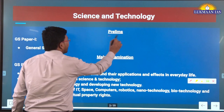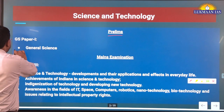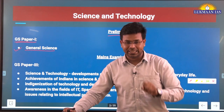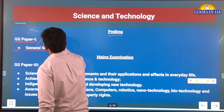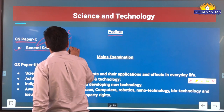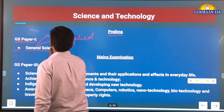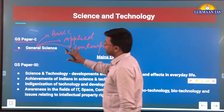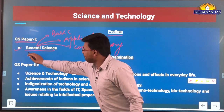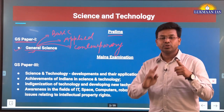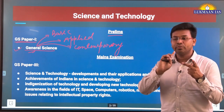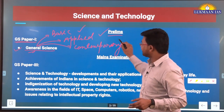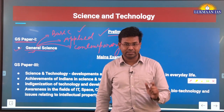For the prelims examination, UPSC has mentioned 'general science' in GS Paper 1. General science includes basic science, applied science, and contemporary developments. So these three things are implied in the keyword 'general science.' We should learn about basic sciences from NCERT books, applied sciences from recent technological developments, and club them with contemporary happenings.